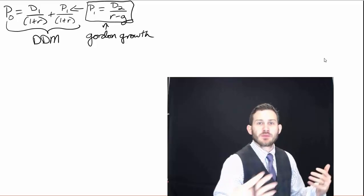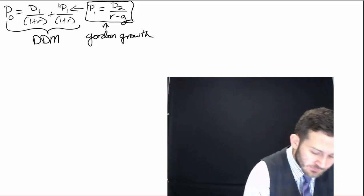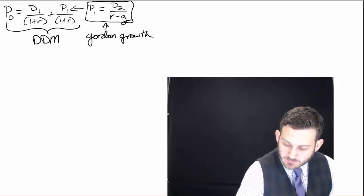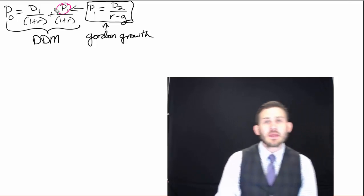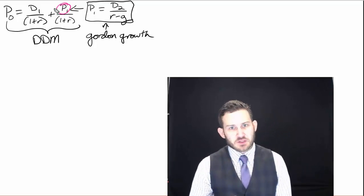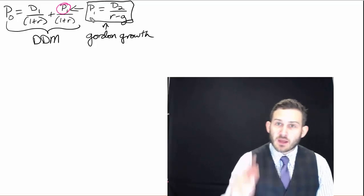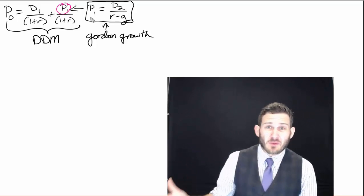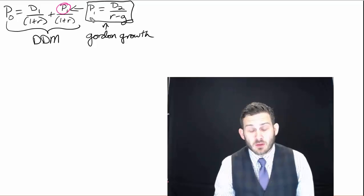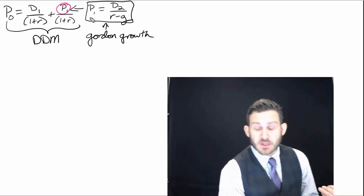We're essentially taking a two-step process now. What we looked at in the past is that we had taken that P1 as being given. We're saying we have a dividend next year and an expected price next year. We've just taken that expected price as given. Now what we're looking at here is that we actually have a model and we've already used it on this Gordon growth model to figure out how to back into what that price next year is.